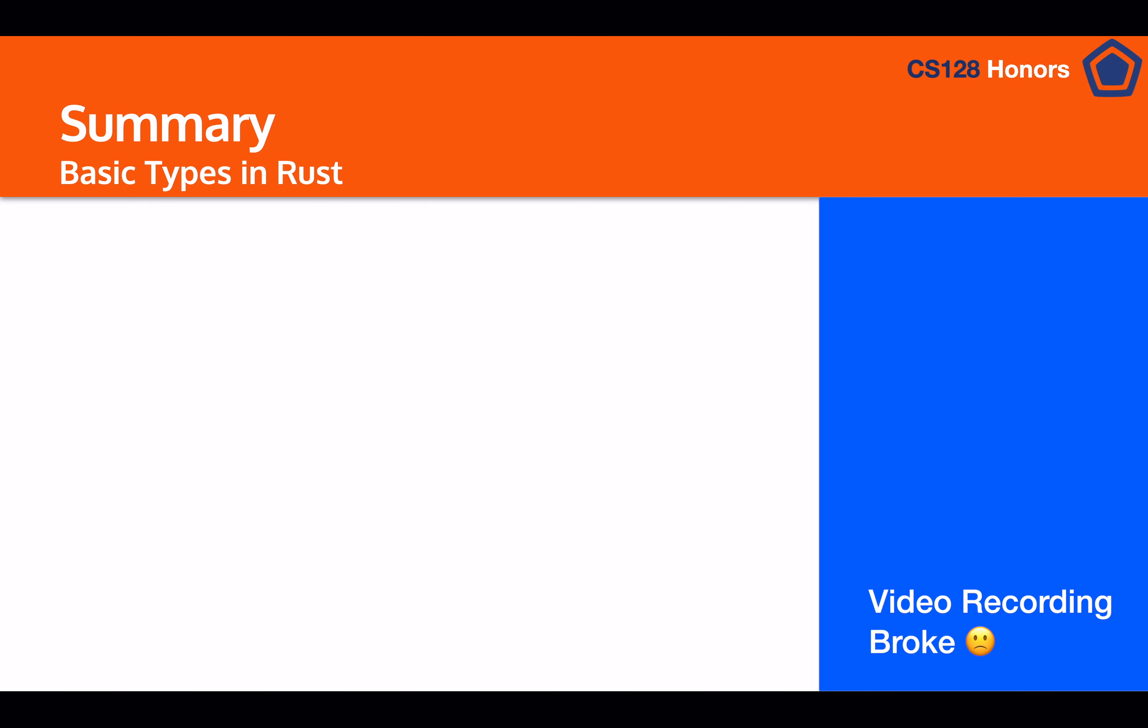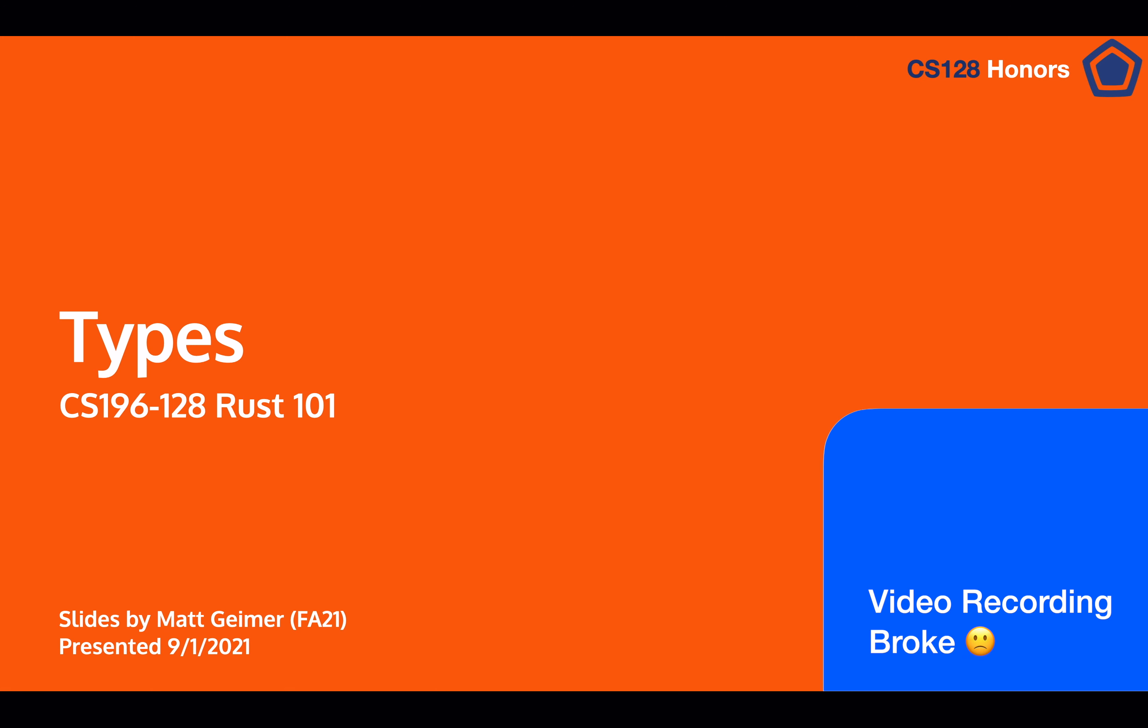So in summary, in this lesson, we talked about scalar types, including integers, floats, booleans, and characters, and how each of those works with Rust and why they're separate. Then we also talked about one non-scalar type, which is strings, because we think that it's relatively important that you learn about strings. I hope you enjoyed that CS128 Honors lesson. In the next lesson, we'll be talking about the control flow for Rust. I hope to see you then.